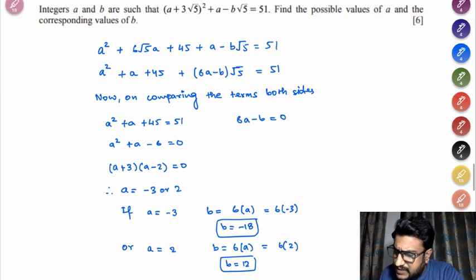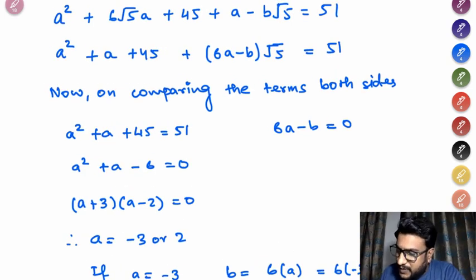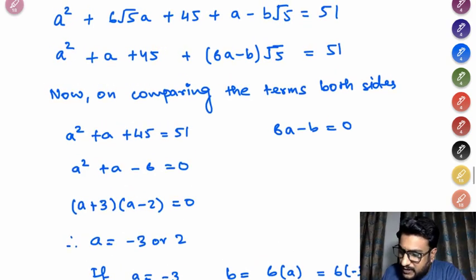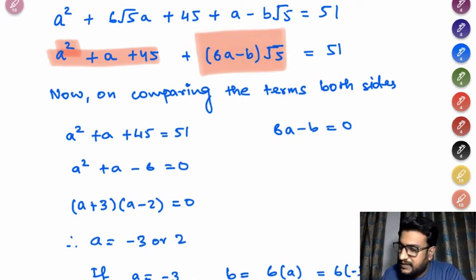Integers A and B are such that this is the equation given. Find the possible values of A and corresponding values of B. And this is a six mark question. Looks simple and easy. But it is easy. So once you open up the bracket and if you connect the like terms over here, if you observe carefully all these are your like terms which are constant and all these are your terms which are with √5.